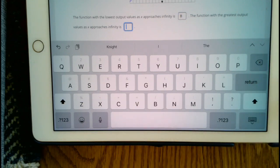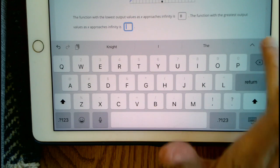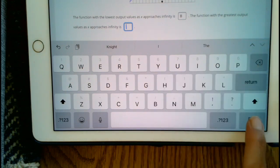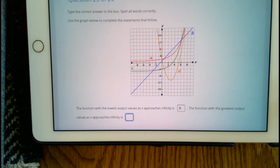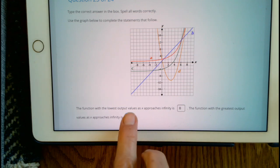And then the function with the greatest output values as X approaches infinity, it's typically the exponential so we can narrow it down to A and C because both of those graphs are exponential graphs. But it actually happens to be the green graph and that's going to be graph C.